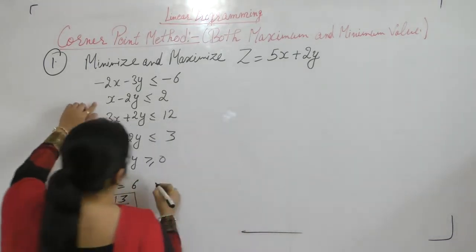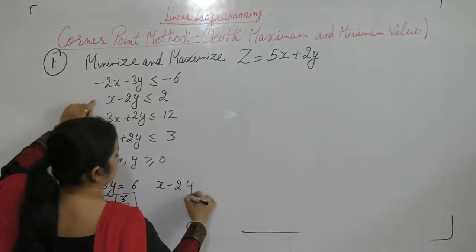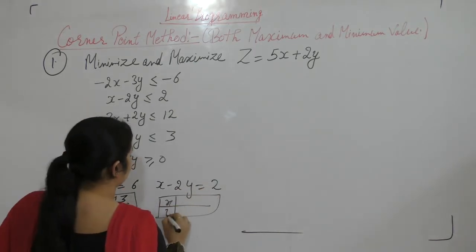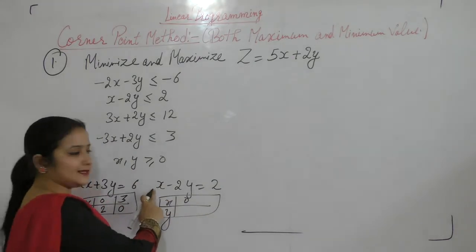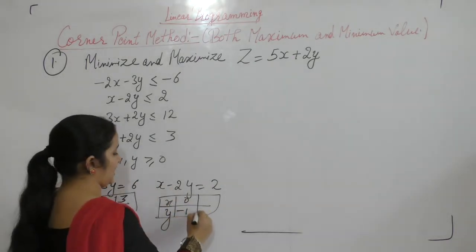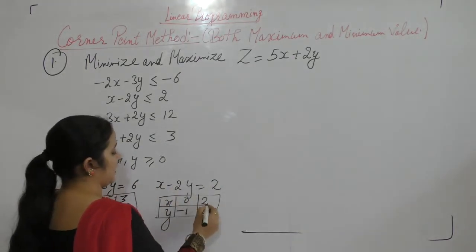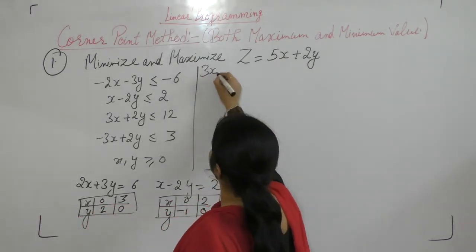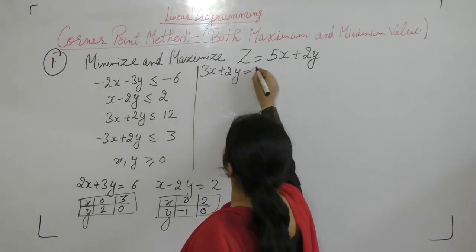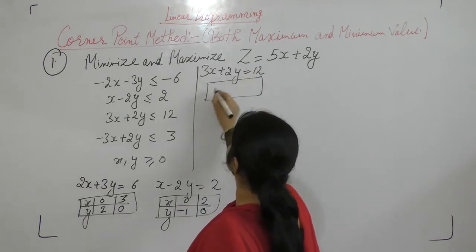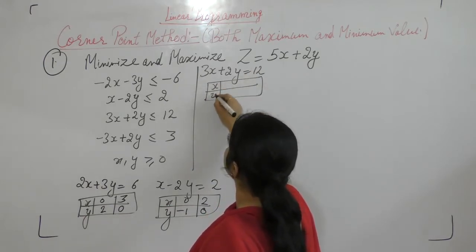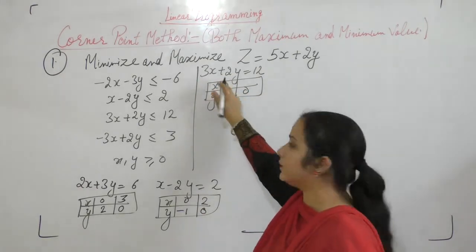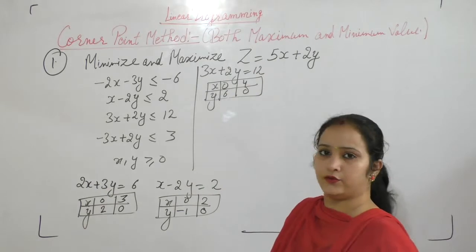The next equation is x minus 2y equals 2. When x equals 0, y equals minus 1, and when y equals 0, x equals 2. Next is 3x plus 2y equals 12. When x equals 0, y equals 6, and when y equals 0, x equals 4.